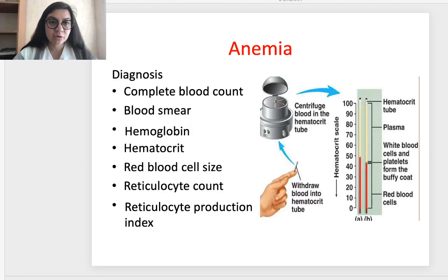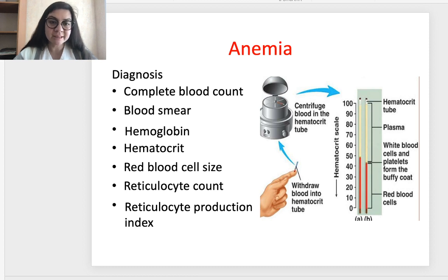To diagnose anemia we should perform a complete blood count and blood smear, checking hemoglobin, hematocrit, red blood cell size, reticulocyte count, and reticulocyte production index.